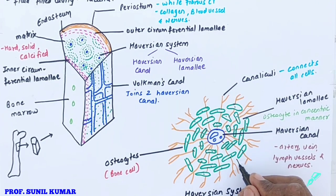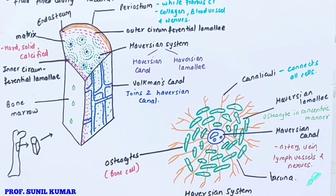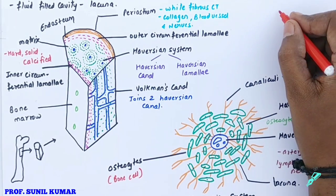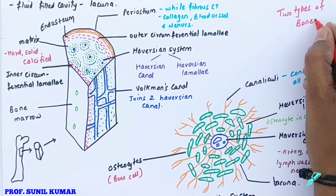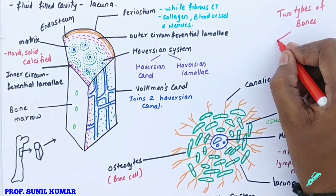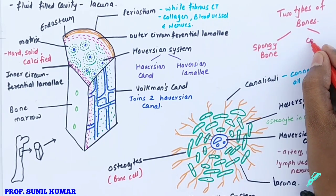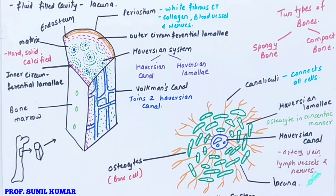There are two types of bone: compact bone and spongy bone. The spongy bone has fewer osteocytes and more fluid-filled matrix, whereas compact bone has more osteocytes and less fluid-filled matrix.